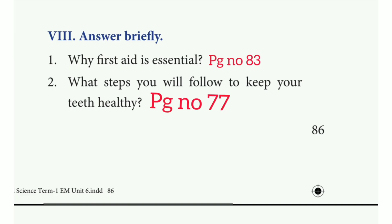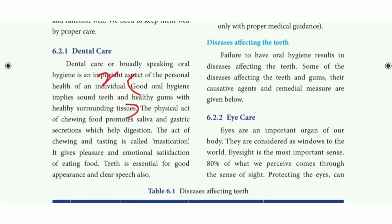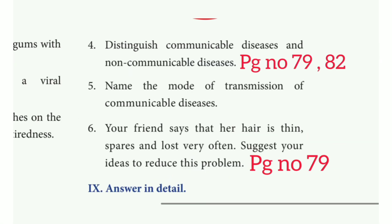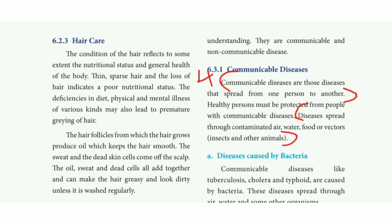Answer briefly. 2nd question: What steps will you follow to keep your teeth healthy? Take page number 77. Good oral hygiene implies sound teeth and healthy gums with healthy surrounding tissue — that is the answer. 3rd question: What does this picture mean? The answer is it says that waste should not be thrown here. 4th question: Distinguish communicable disease and non-communicable disease. Take page number 79, under communicable disease — mark the first 2 lines as point 1, then the last 3 lines as point 2.